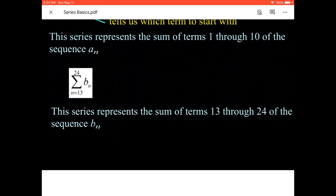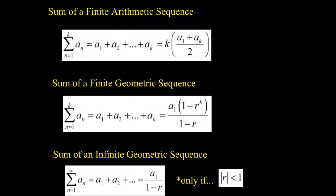The second example has 13 down low and 24 up top, representing the sum of terms 13 through 24 of sequence b-sub-n. Most of the time you'll start with n equals 1, but in a real-world scenario — like a business tracking monthly profits — terms 13 through 24 could represent the profits of year 2, since month 13 starts year 2 and month 24 ends it.